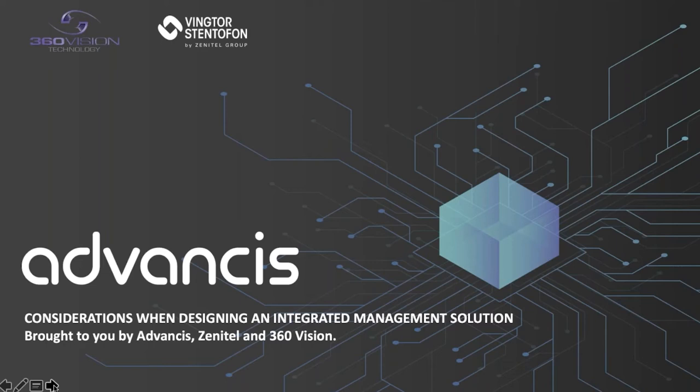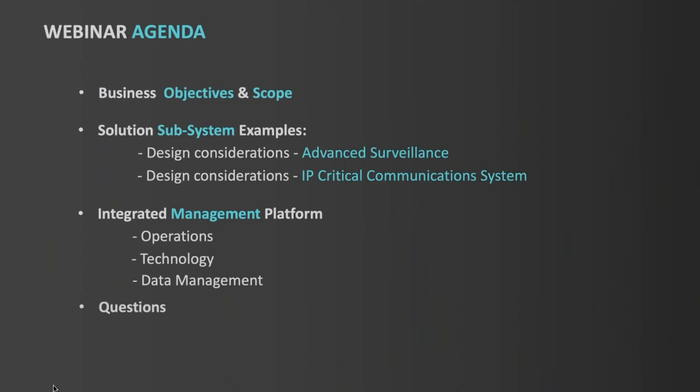Today we're going to be discussing the high-level considerations when deploying, scoping, and designing an integrated management solution. This is broken out into four sections. The first covers high-level objectives when considering deploying such a solution. Then we'll lead into two specific subsystem technology examples: advanced CCTV surveillance delivered by Tony Holloway and Mark Rainbow of 3.6 Division, and the design and implementation of an IP-critical communication system from Kjell Luritsen of Zenitel.